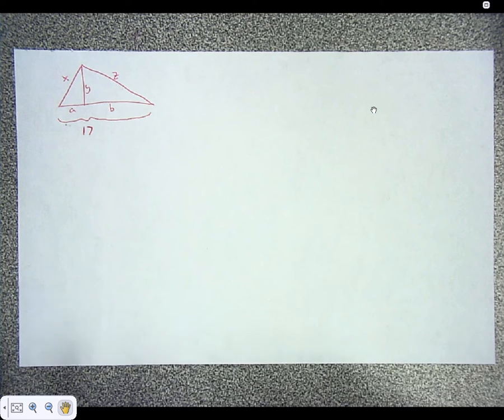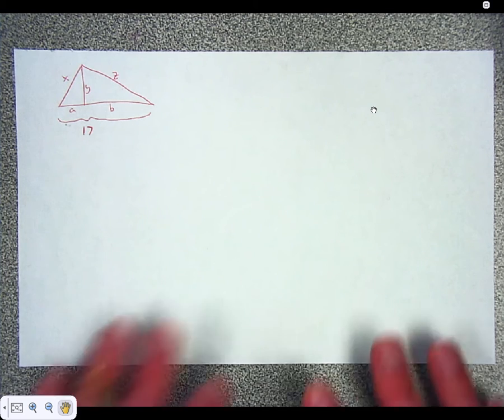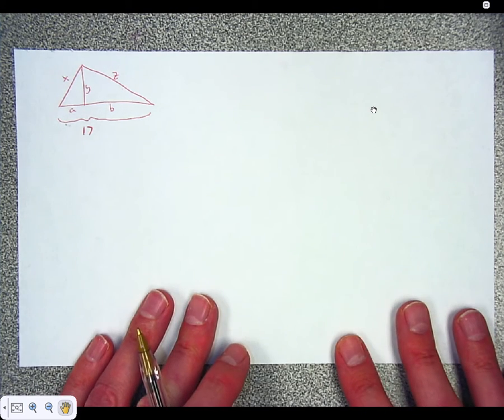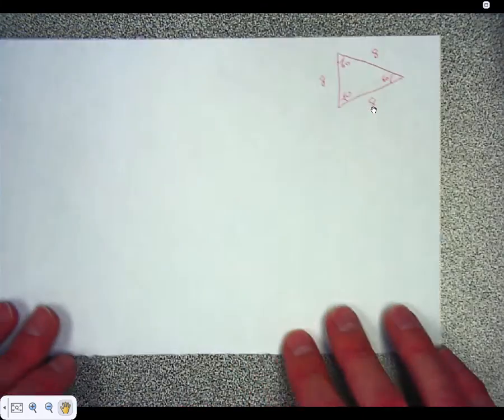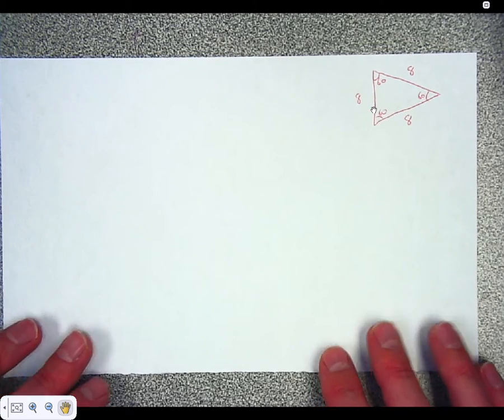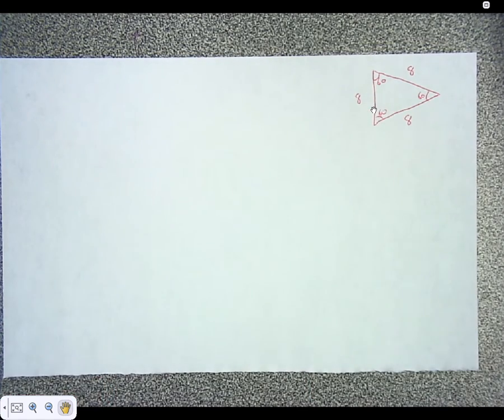Before we dig into this too much, I need to make sure that you have some background information. So I'm going to put that aside and I'm going to pull out a different triangle. So I have an equilateral triangle here. Pretend that's an equilateral triangle. I labeled it 8, so it must be equilateral.